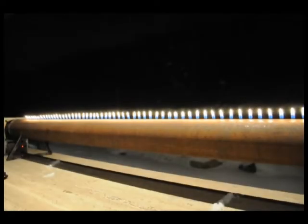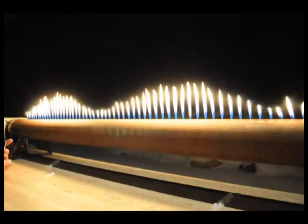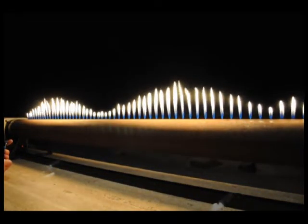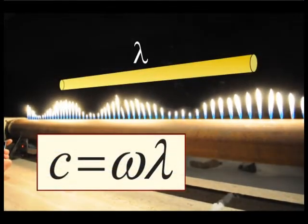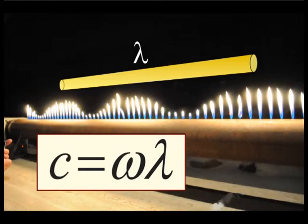Let's take a look at the Rubens Tube in action. Using a simple signal generator app, I can send a pure tone through the tube. This causes the flame heights to adjust into peaks and valleys. The distance between these peaks should correspond to the wavelength of the sound.